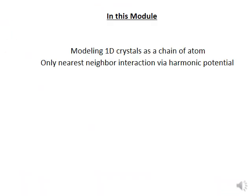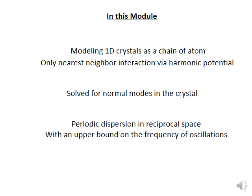In summary, this module modeled atomic vibrations in a one-dimensional crystal by approximating it as a chain of atoms where each interacts with its nearest neighbor via a harmonic potential. Solving for the normal modes of this chain, we found a dispersion relation of a new type — periodic in reciprocal space, with an upper bound on vibrational frequency and nonlinear ω-k relationship — all arising because we incorporated the periodicity of the lattice into our calculation.